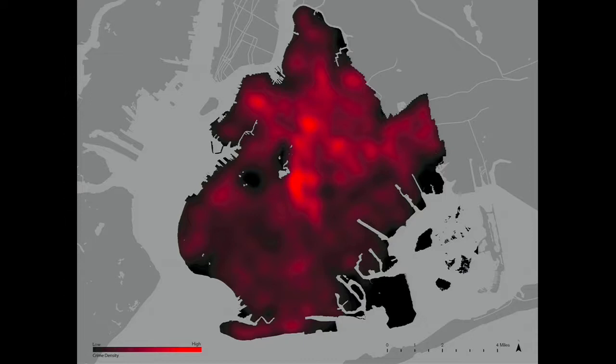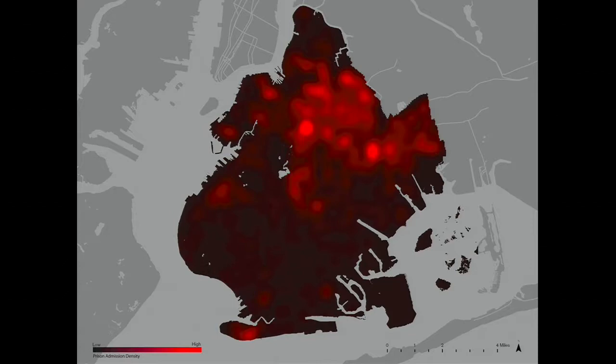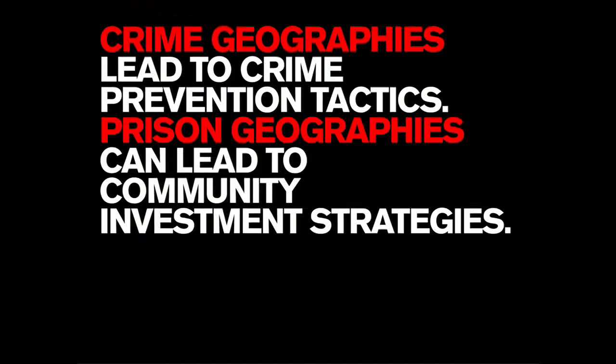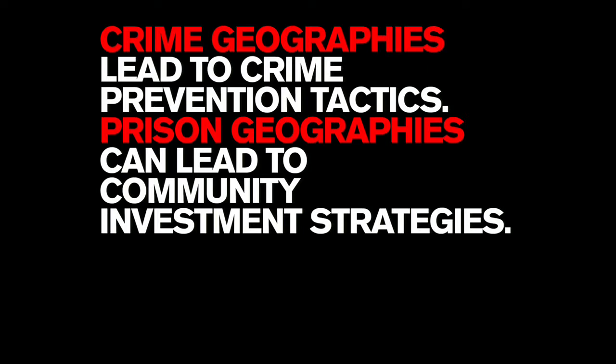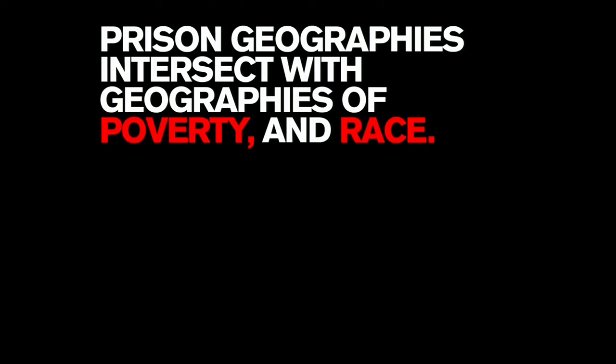The data in geographic context shows that people in prison are highly concentrated in specific neighborhoods. This is a prison admission density map, while crime is much more dispersed across the city. When you go back and forth, you notice prison admissions are much more concentrated than the dispersion of crime. Crime geographies lead to crime prevention tactics, while prison geographies can lead to community investment strategies.